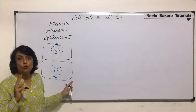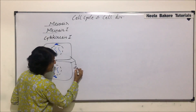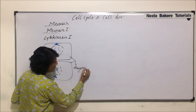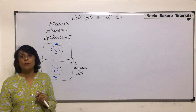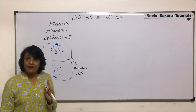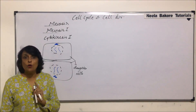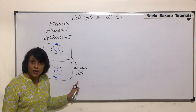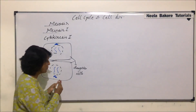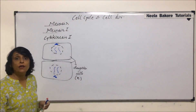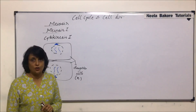What we get are two daughter cells. These daughter cells have half the number of chromosomes compared to the parent cell. We started with the parent cell having 2N equal to 4, so each daughter cell now has half the number of chromosomes — the daughter cell is haploid. That is why we call meiosis 1 the reductional division.